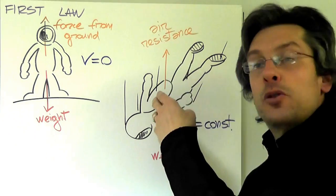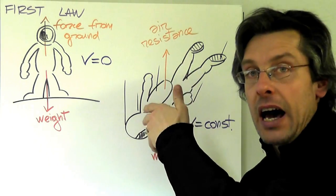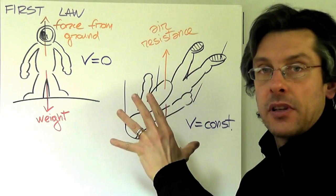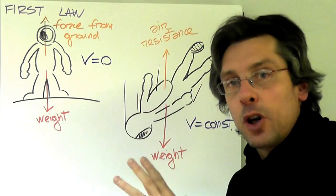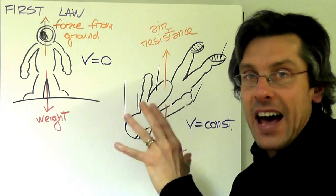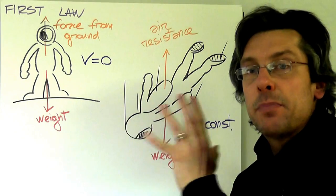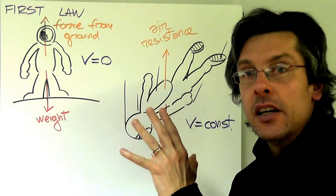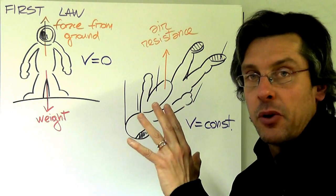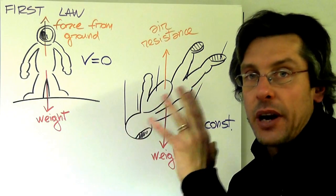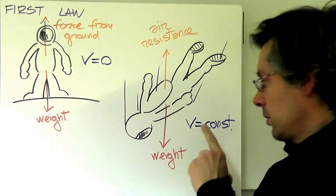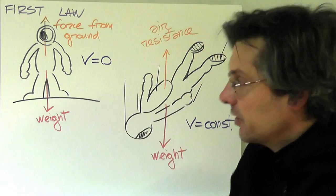Since these two forces cancel each other out, it doesn't mean that he stops in mid-air. He's still going—actually, he's going very fast—but his speed, actually his velocity, is constant at this point. He's not accelerating anymore. So that's the meaning of velocity equals constant.